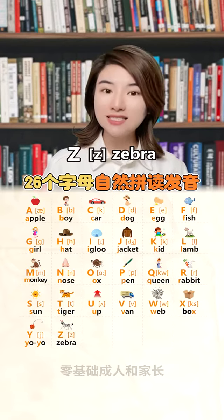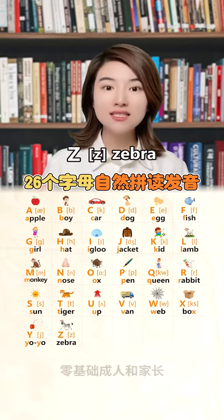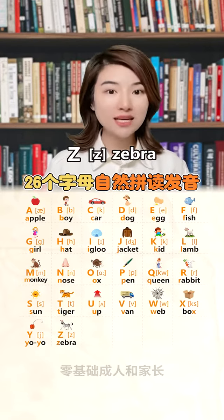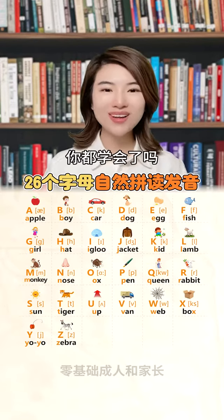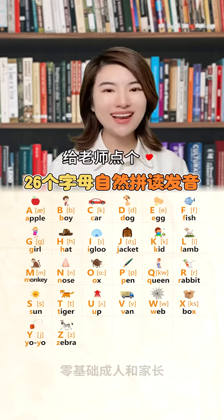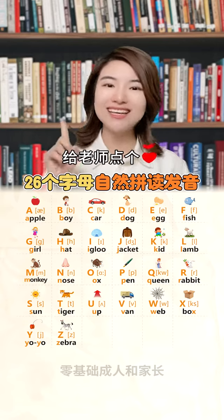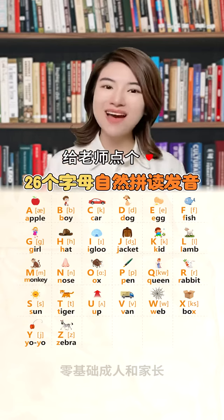Z, z, z, z, zebra. 你都学会了吗？学会了，给老师一颗小星星吧！